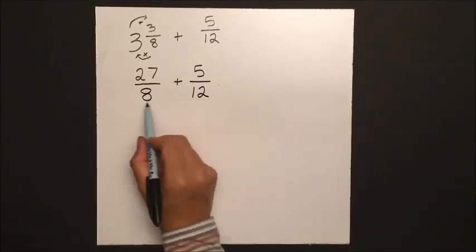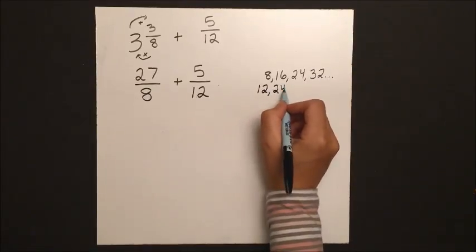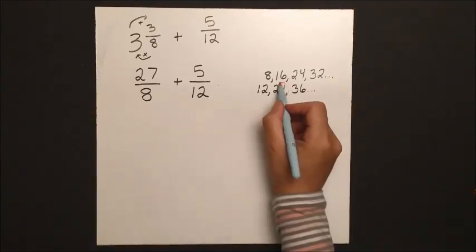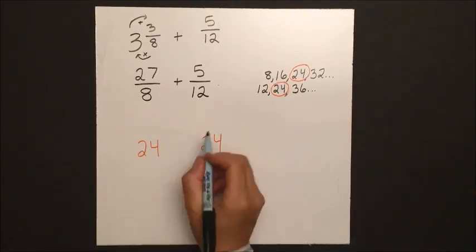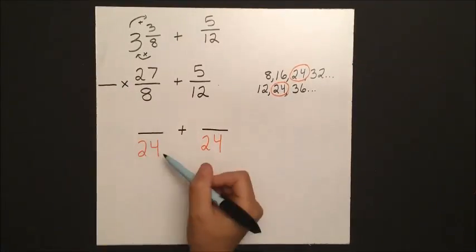We still need a common denominator, so list out the multiples for both numbers until you find when that matches, and in this case it would be 24. Once you have the new denominators, you need to find out how did we get there. So 8 times what gives us 24?